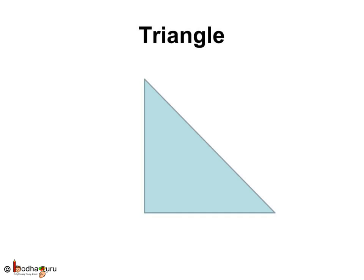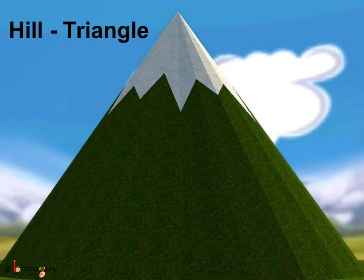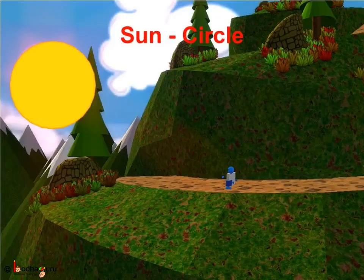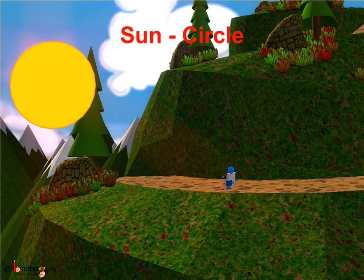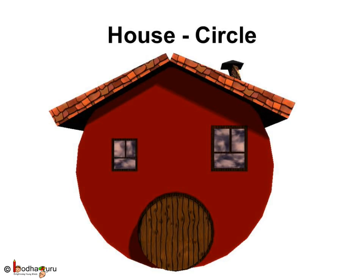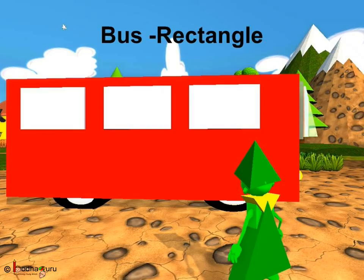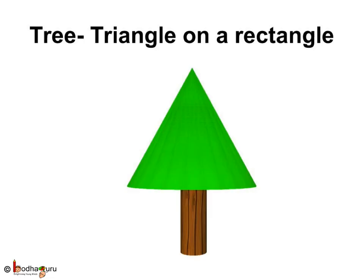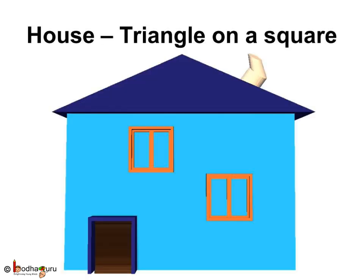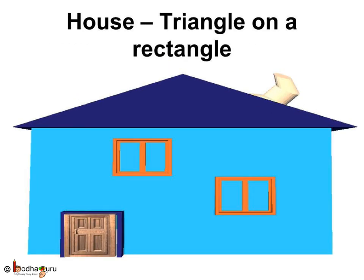Magic, isn't it? Let us see the different shapes in the story. The hill is like a triangle. The sun is like a circle. The bus is like a rectangle. The tree is like a triangle on a rectangle. This house is a triangle on a square. This house is a triangle on a rectangle.